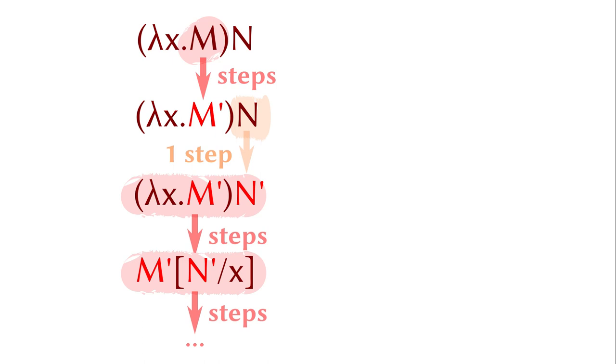There are many optimizations we can apply to the process. First of all, we might re-evaluate the function body more than once. Think about the application of lambda x dot m to n. It's likely that we normalize the function body m before the function application, and then re-normalize it after the substitution. Can we evaluate the function body only once?